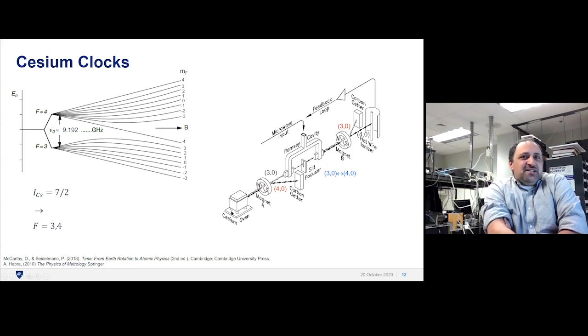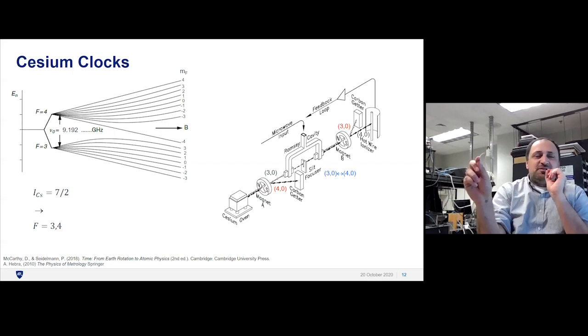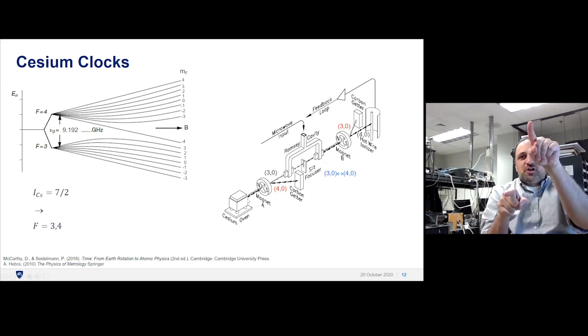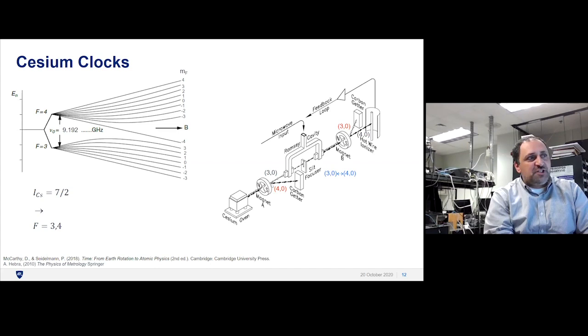This is conceptually easier to follow. Instead of generating light, this starts with a beam of cesium. Remember the Stern-Gerlach experiment—you had the beam of silver passing through magnetic poles, deflecting the different charge states. You have a beam of cesium with atoms in the F equals three and F equals four states. These magnets act as a selector—if you're in F equals three, you keep moving down the beam line. If you're in F equals four, you get deflected and kicked out.